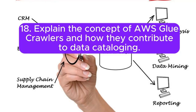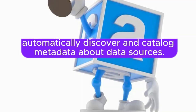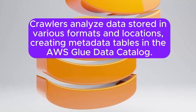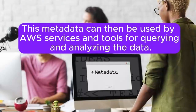18. Explain the concept of AWS Glue Crawlers and how they contribute to data cataloging. Answer: AWS Glue Crawlers are components of AWS Glue that automatically discover and catalog metadata about data sources. Crawlers analyze data stored in various formats and locations, creating metadata tables in the AWS Glue Data Catalog. This metadata can then be used by AWS services and tools for querying and analyzing the data.